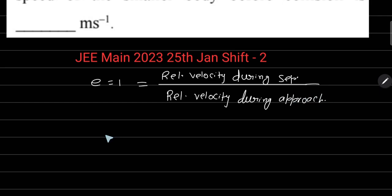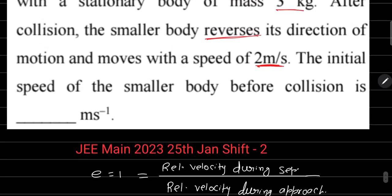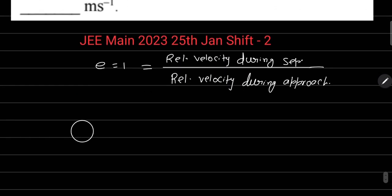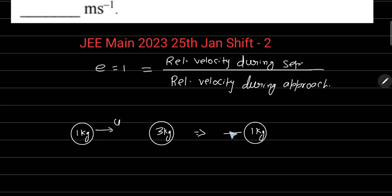ठीक है, during approach। तो यहाँ पर e = 1। पहले एक बार diagram बना लें। पहला body जिसका mass 1 kg है — वो u speed से जा रहा होगा। And 3 kg का body यहाँ पर rest पर है। After collision, जो 1 kg है, वो अपना direction reverse कर ले रहा है — पहले right में जा रहा था, अब left में जाने लगा, but speed 2 meter per second है। 3 kg के body की speed अभी मालूम नहीं, तो हम assume कर लेते हैं।